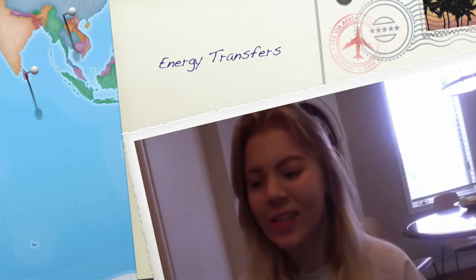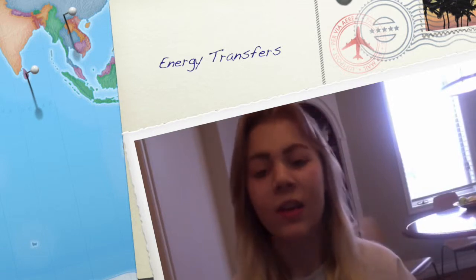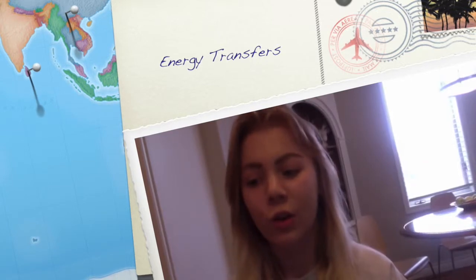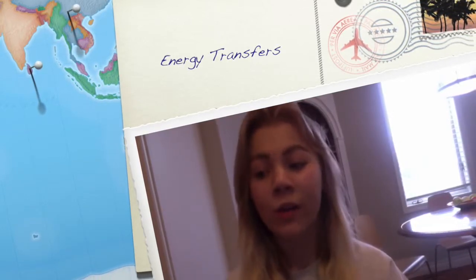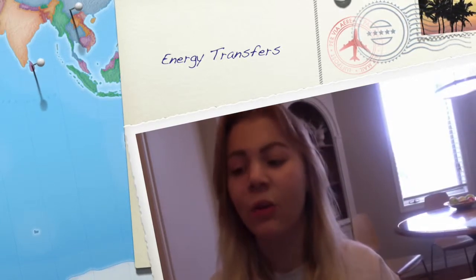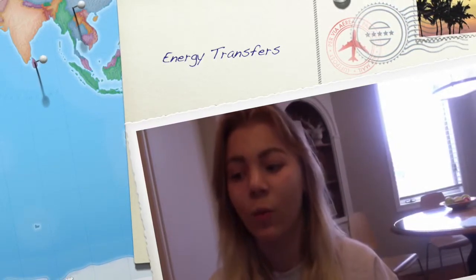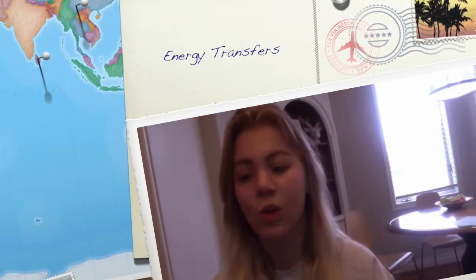First we're going to discuss heat transfers. There are three ways that heat can be transferred: conduction, convection, and radiation. Conduction is the transfer of energy through vibrating particles that are touching. Convection is the transfer of energy through the movement of liquid or gas, and radiation is the transfer of energy through electromagnetic waves. Today we're cooking baked macaroni and cheese, which has many energy transfers.